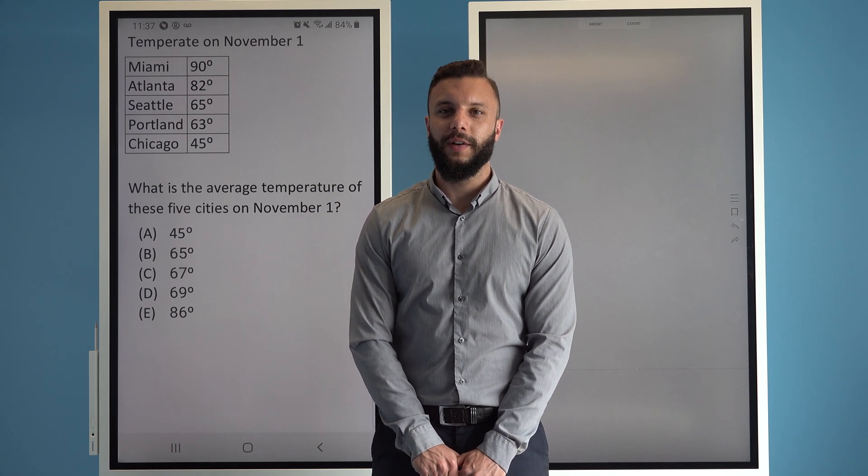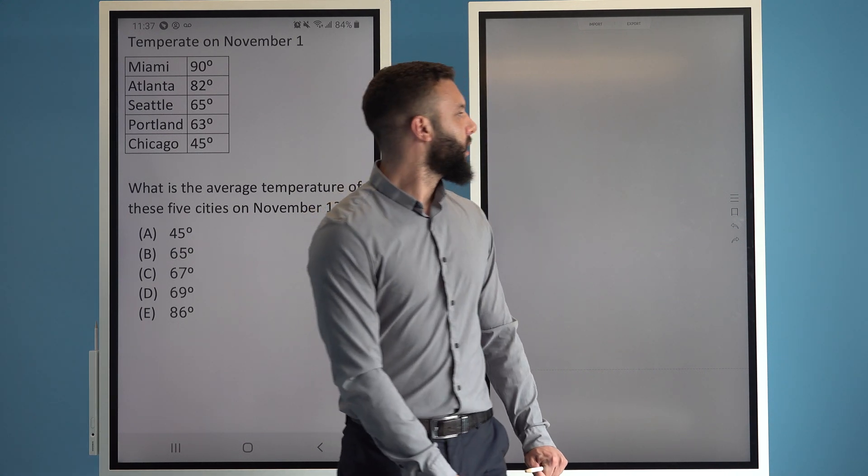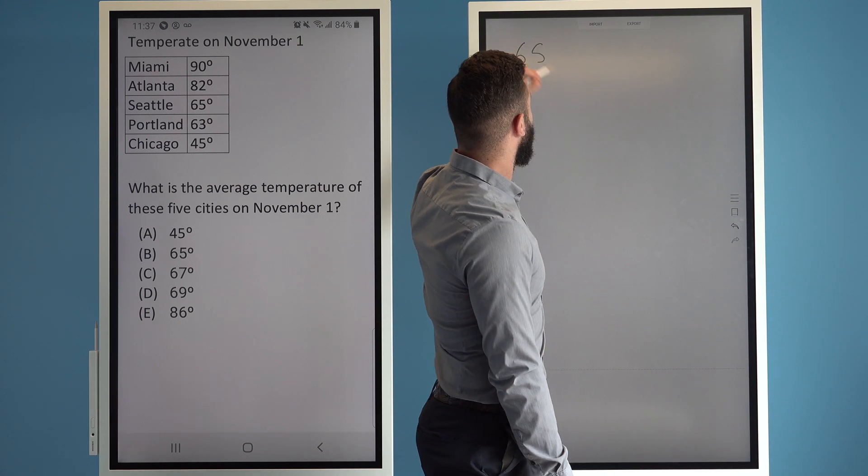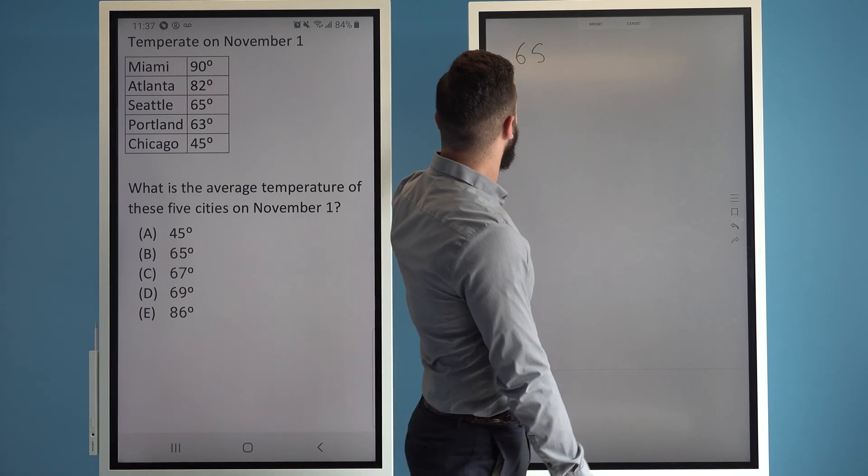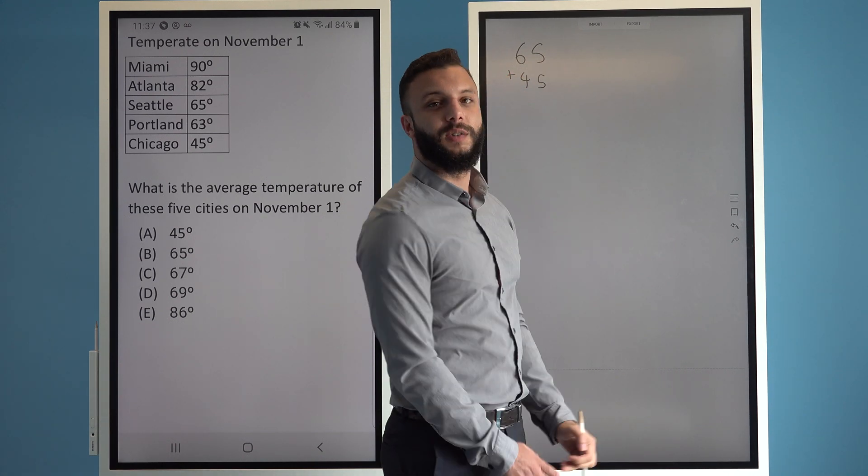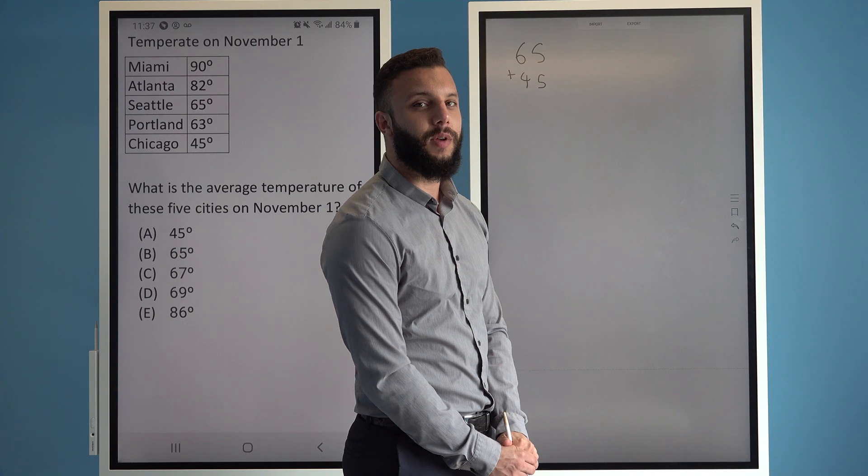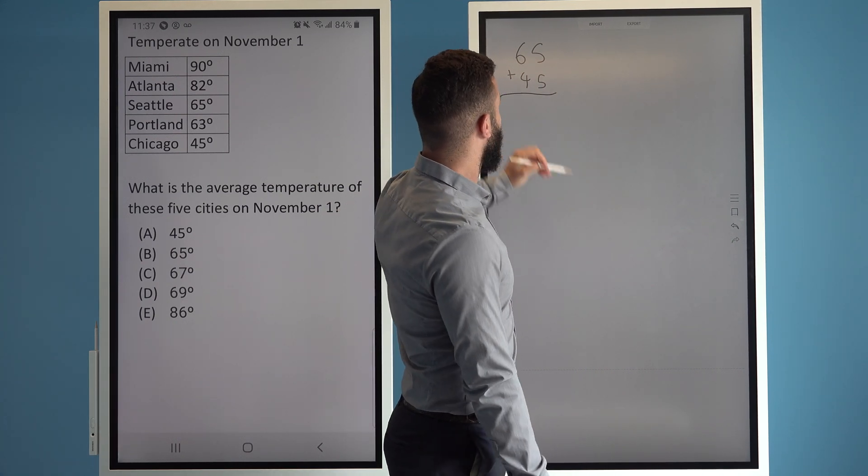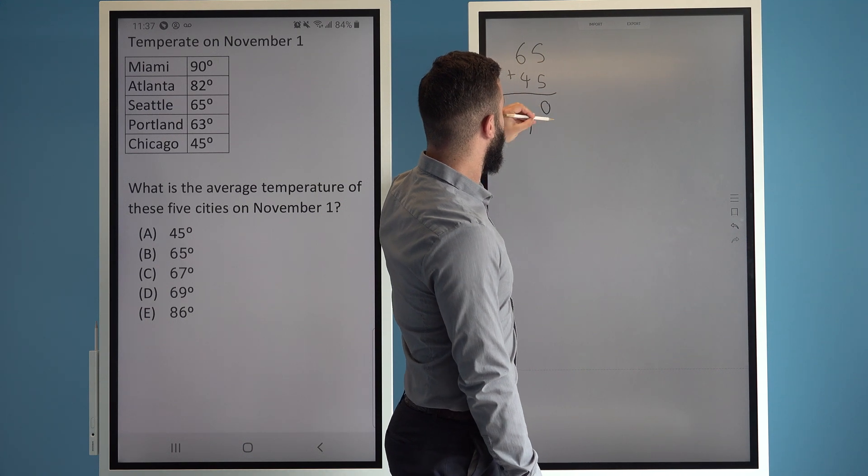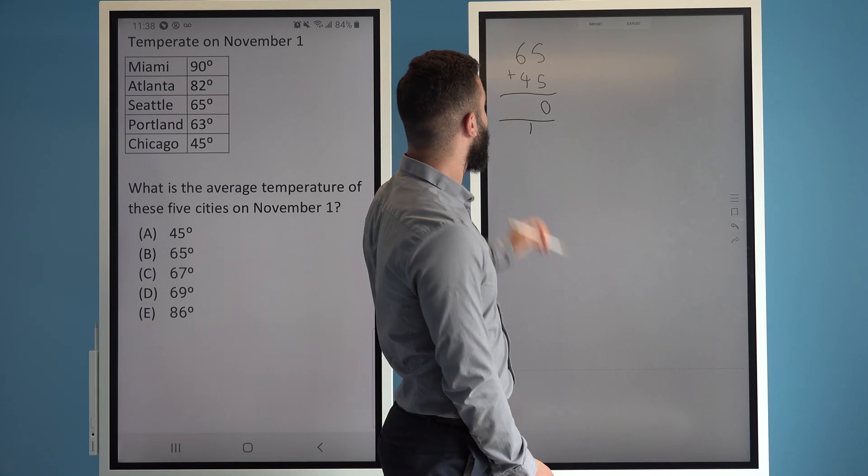We're going to group some of our values together which are nice and easy to add. 65 is paired with 45 as these numbers both end in a five. When we add them together it will give us a nice round number. 5 plus 5 is 10. 6 plus 4 gives us 10 plus the 1 gives us 11, so 110.